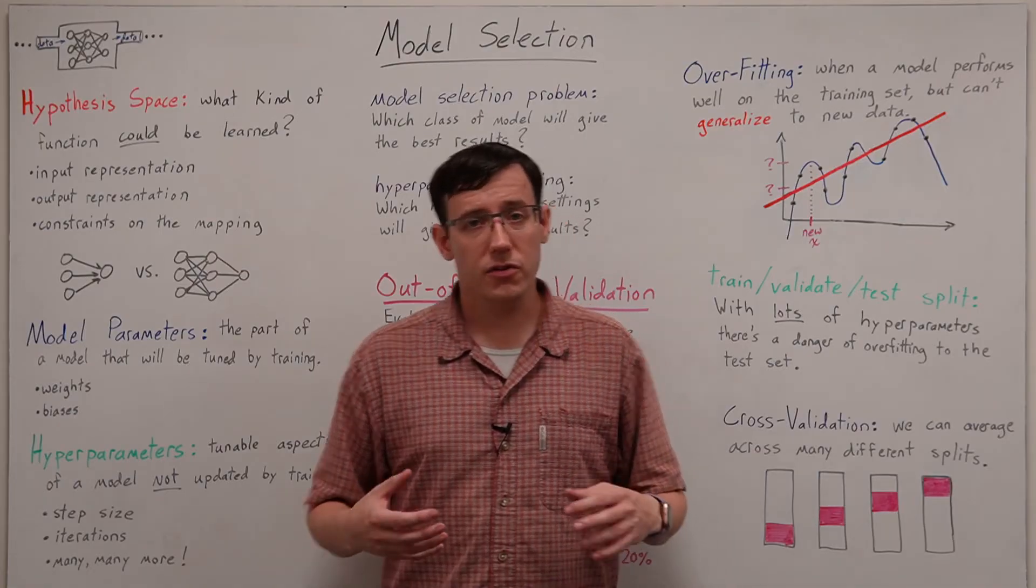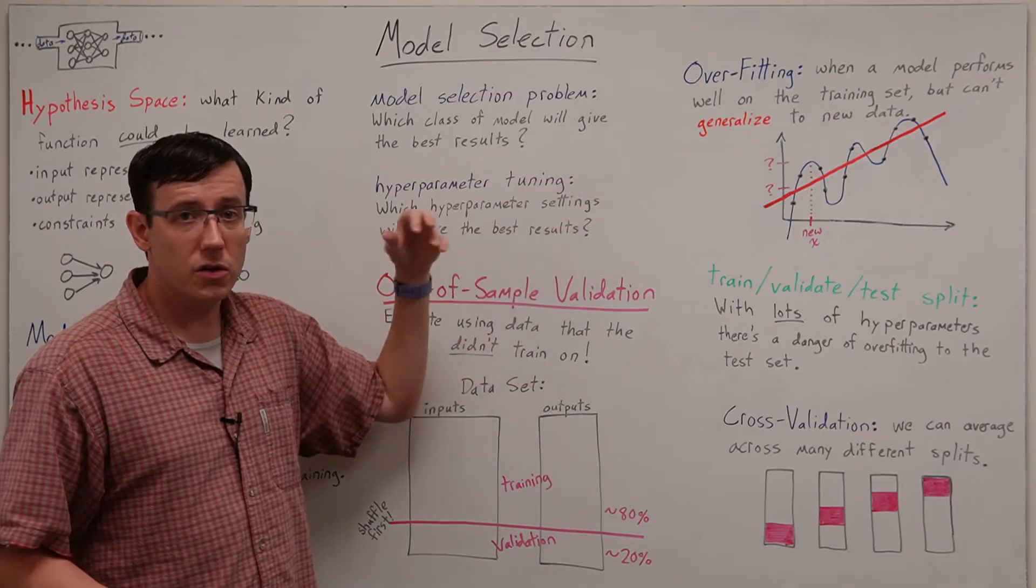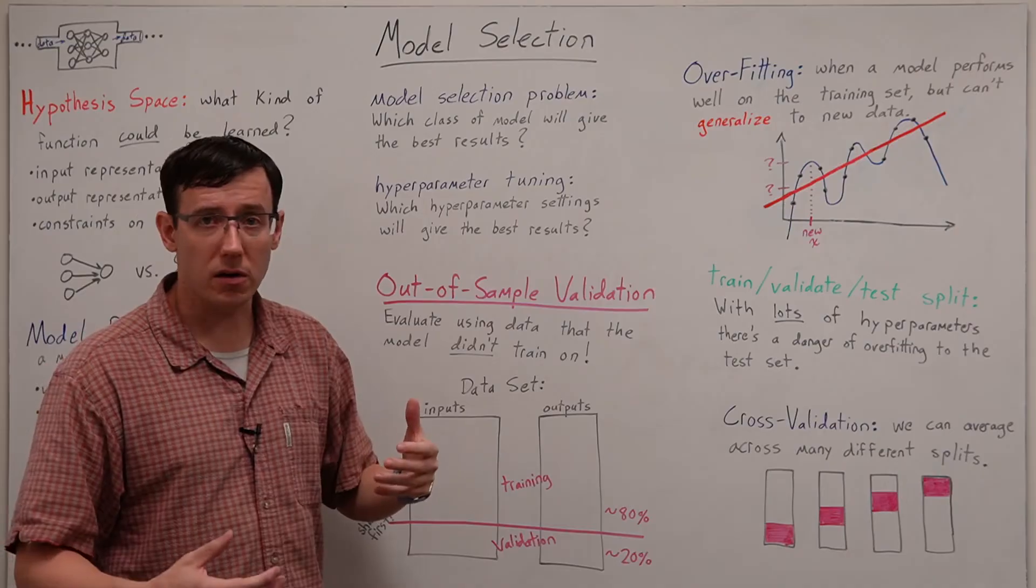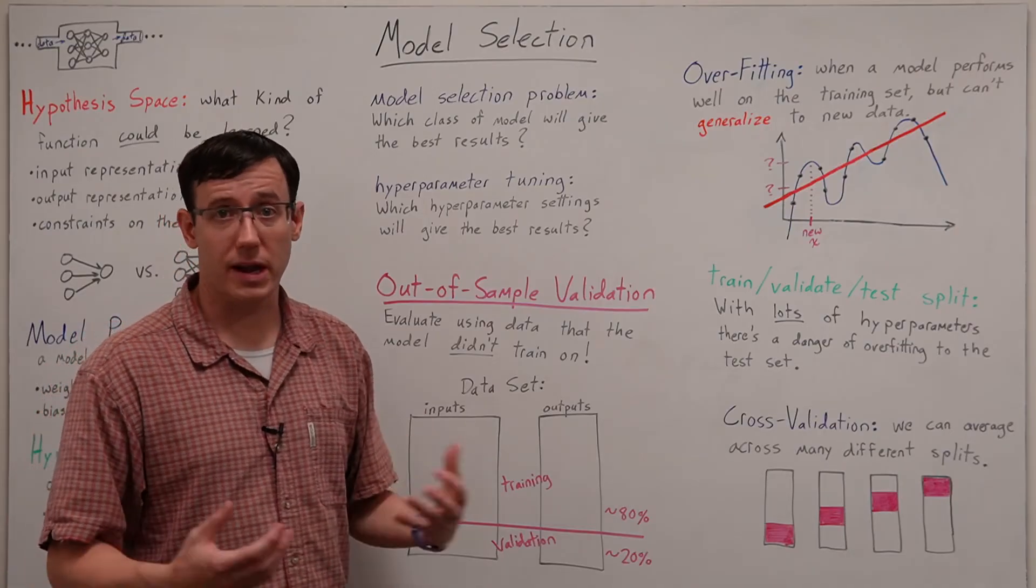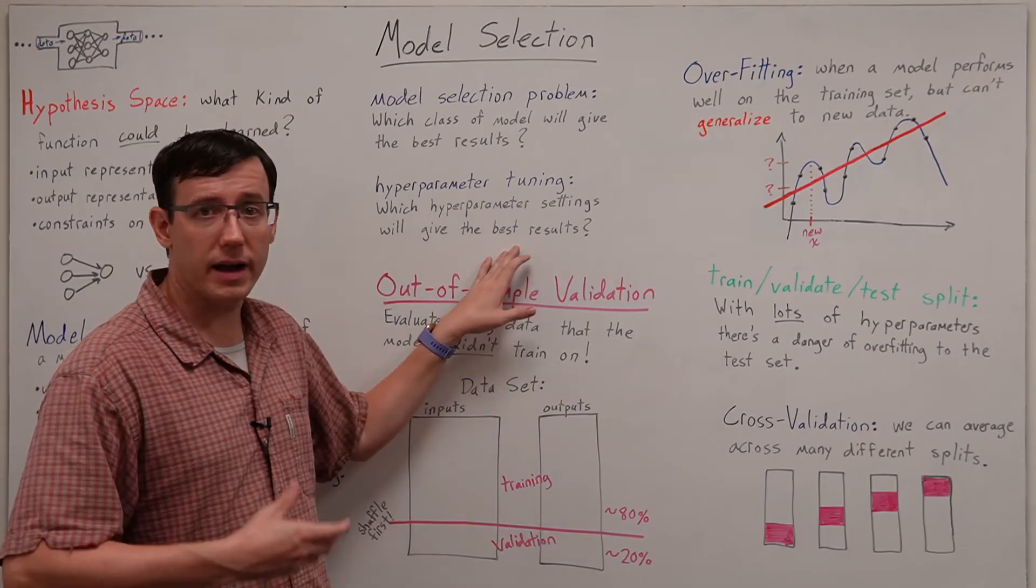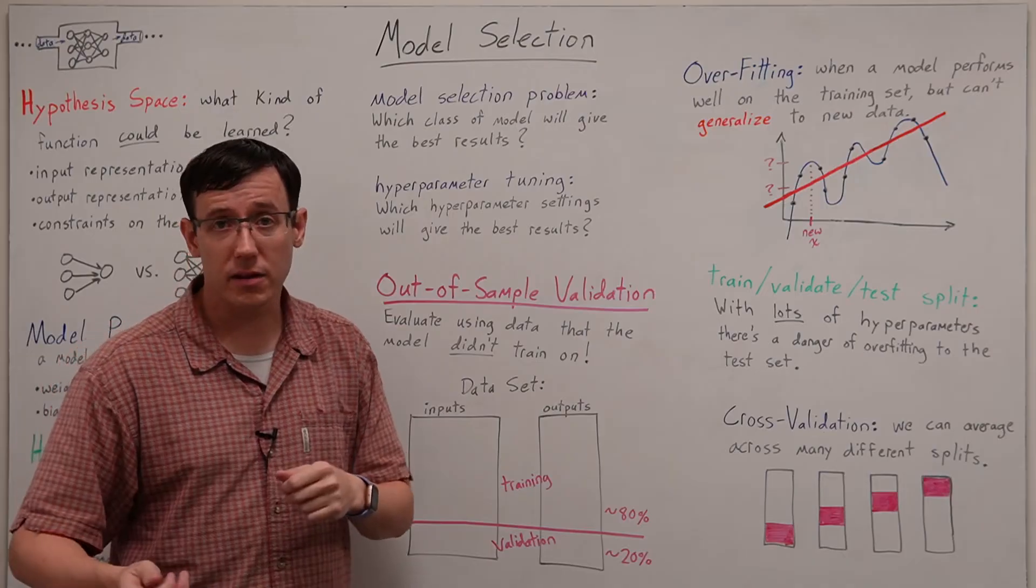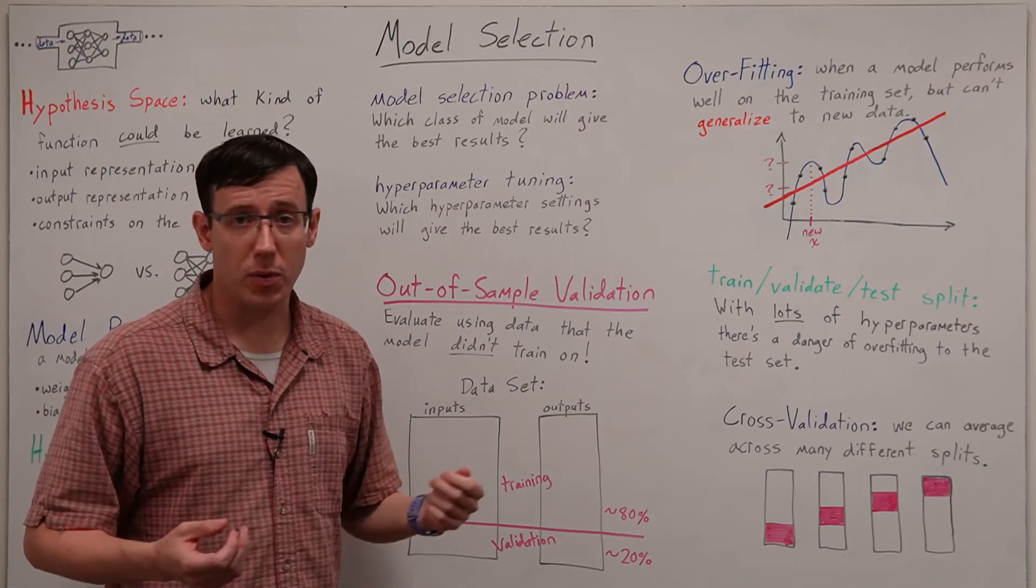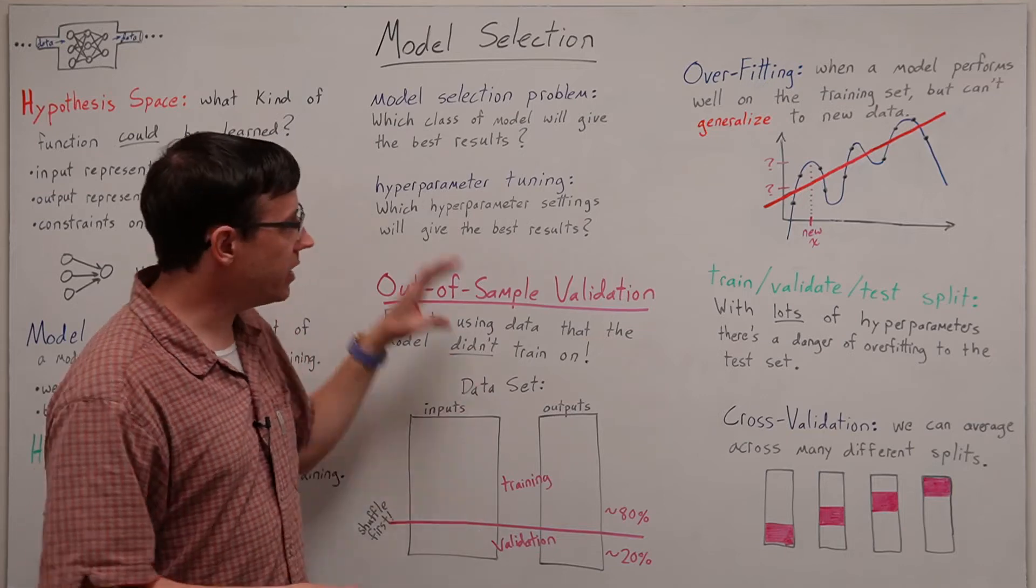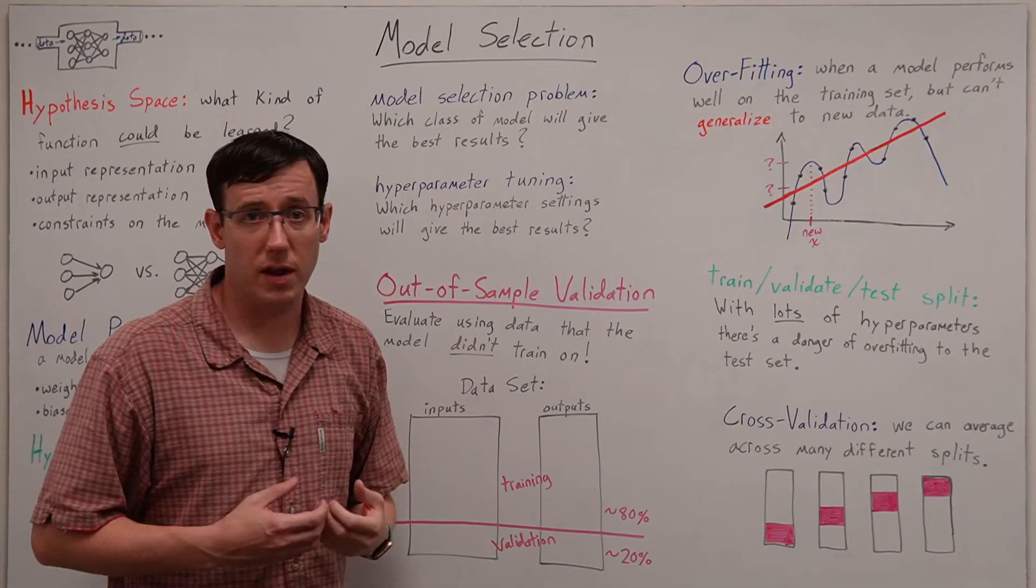And this now lets us define the model selection problem which is about choosing between different plausible models which one will be best at representing our data set. And this is closely related to the idea of hyperparameter tuning which is about selecting the values of the hyperparameters that will best represent the data. And my phrasing here is deliberate because these are fundamentally the same problem.